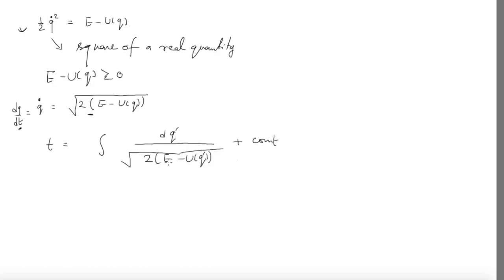You expect two constants of integration because your system is really described by Euler-Lagrange equations which are second-order differential equations. So there should be two constants of integration. And indeed you already have those two: one is the constant from doing the integral, and the other is E. Both of these are determined by your initial conditions.